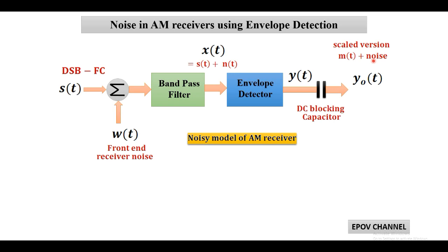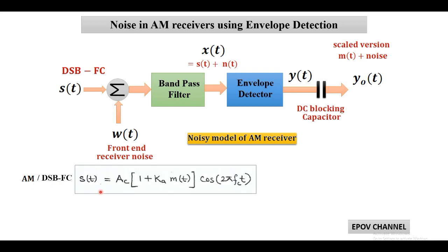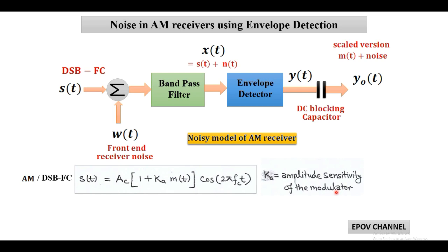As we know, standard AM or double sideband full carrier is given by: S(t) = AC[1 + KA·m(t)]·cos(2πfct). Here, KA is called the amplitude sensitivity of the modulator, which equals 1/AC, where AC is the carrier amplitude.